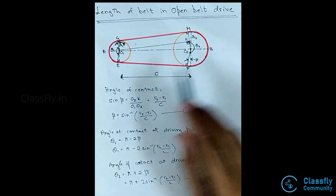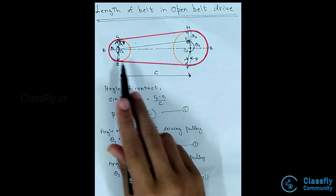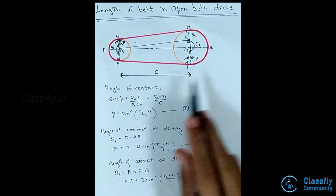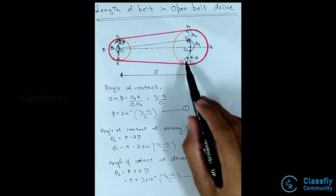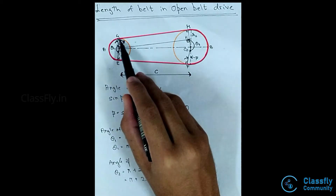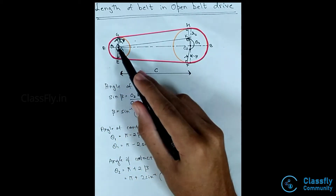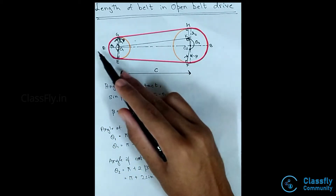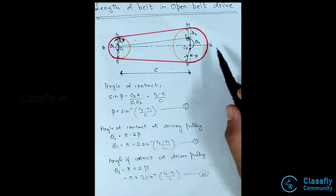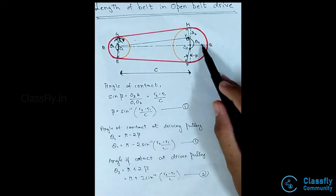r1 and r2 are the radii of the two pulleys. Let beta be the angle of contact. The angle of contact at the driving pulley A is given as theta 1, and at the driven pulley it is given as theta 2.